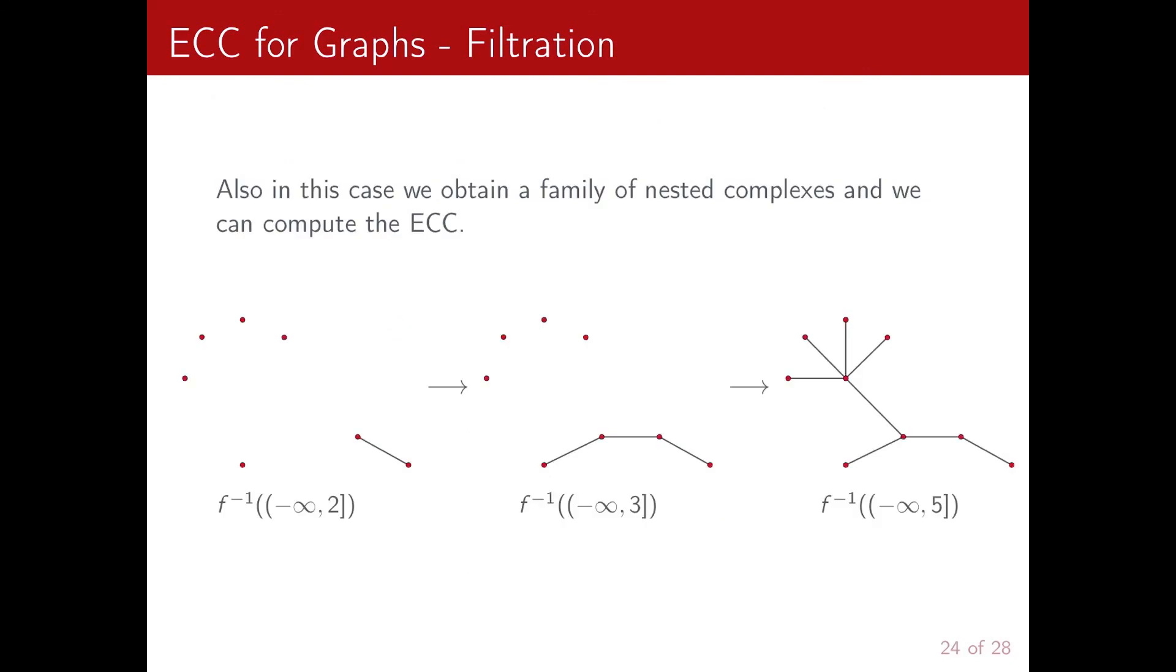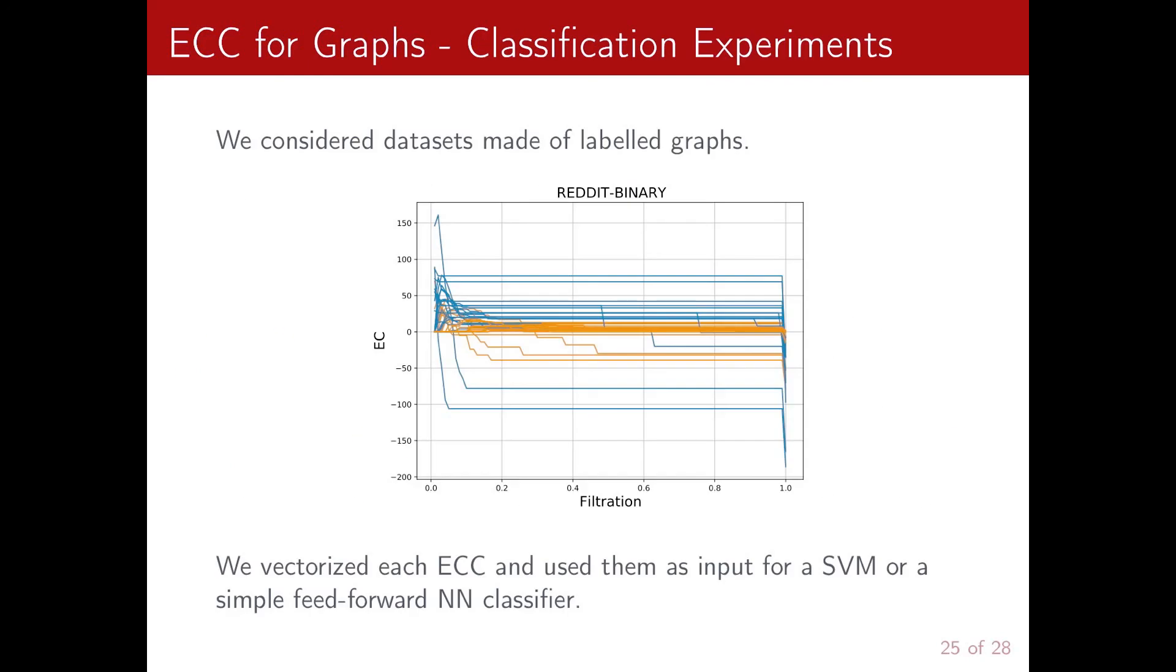So also in this case, of course, we obtain a family of nested complexes and we can compute the Euler characteristic curves. So we consider datasets made by large collections of labeled graphs, in particular social graphs obtained by interactions over Reddit. And as before, we vectorized the ECC for each graph and we use them as input for a feedforward neural network with two hidden layers.